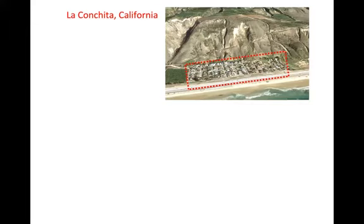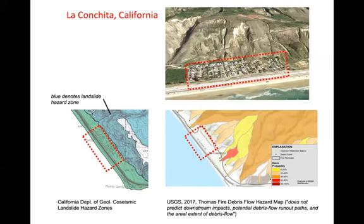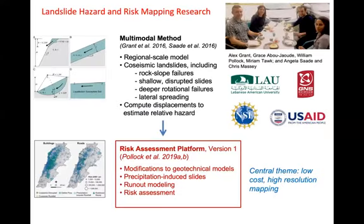That problem is not just limited to Washington State. If we look at the community of La Conchita in California, the available California Department of Geology co-seismic landslide hazard zones show the community falls outside that zone. A debris flow hazard map produced after the Thomas Fire comes with the stipulation that it does not predict downstream impacts and potential debris flow runout paths. So again, that's very much the standard — and one of the things we were aiming at in this project was to provide a better depiction of the kind of risk to people, but also to potential loss of capital assets and infrastructure.